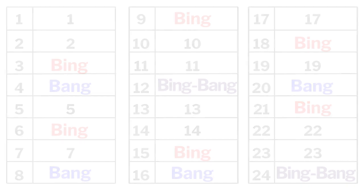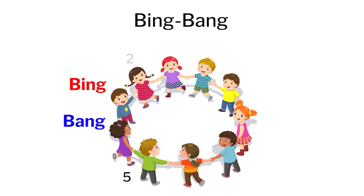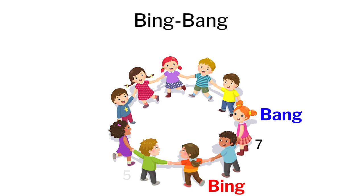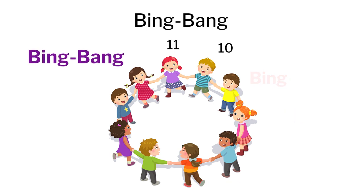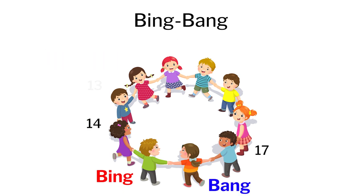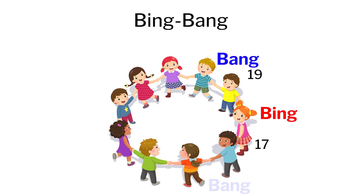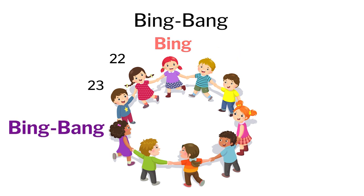Let me show you how the game goes. The first child starts: 1, 2, bing, bang, 5, bing, 7, bang, bing, 10, 11, bing bang, 13, 14, bing, bang, 17, bing, 19, bang, bing, 22, 23, bing bang.